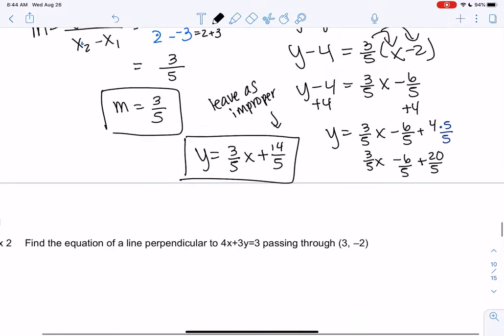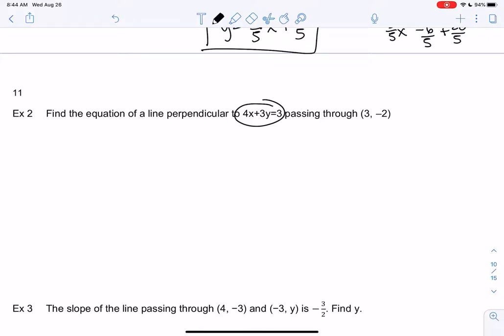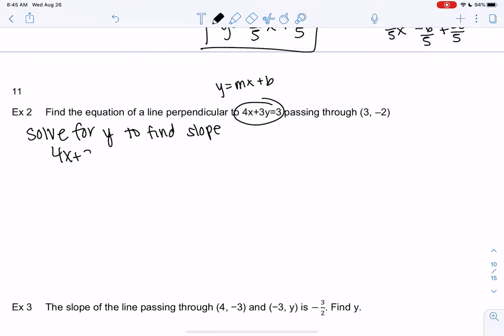So I have a couple more. This is a shorter section. We want to find the equation of a line perpendicular to 4x plus 3y equals 3. And we know the point. So because we know it's perpendicular, we can use that to find the slope. So let's solve for y so we can find slope. That'll give us y equals mx plus b, which will tell us the slope. So I'm going to subtract 4x. So 3y, and I'm going to do the negative 4x plus 3. And then we'll divide by 3. So y equals negative 4 thirds x plus 1. So m would be negative 4 thirds.